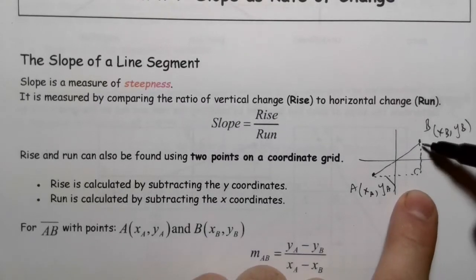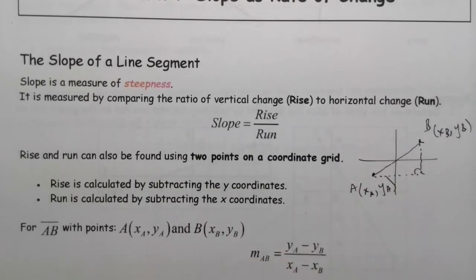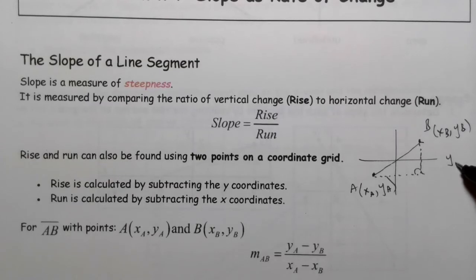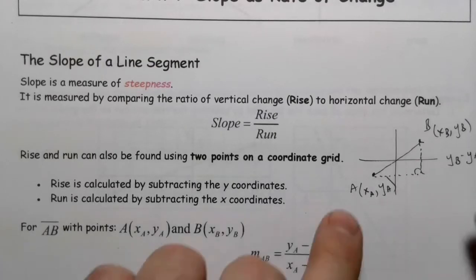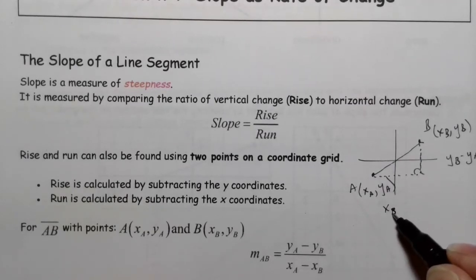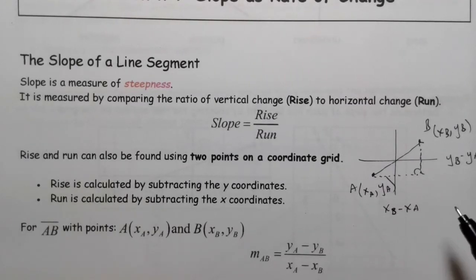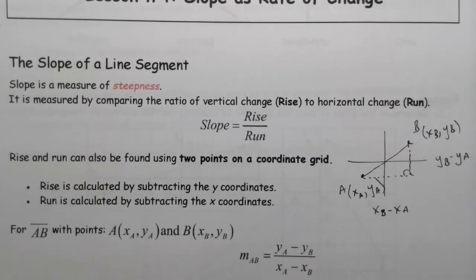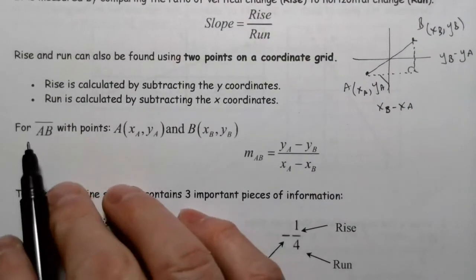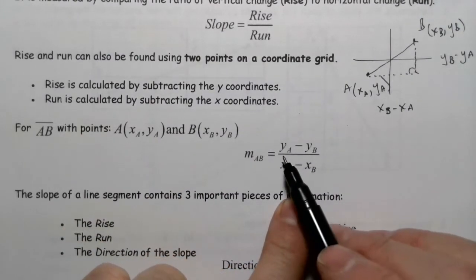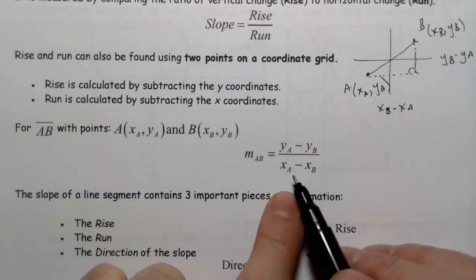On the coordinate plane, when we have a line, there is a formula we can use. Rise is calculated by subtracting the y-coordinates. Let's say we've got a point here and a point here, call this A and B. The coordinates would be x_a, y_a and x_b, y_b. The rise is y_b minus y_a over x_b minus x_a.